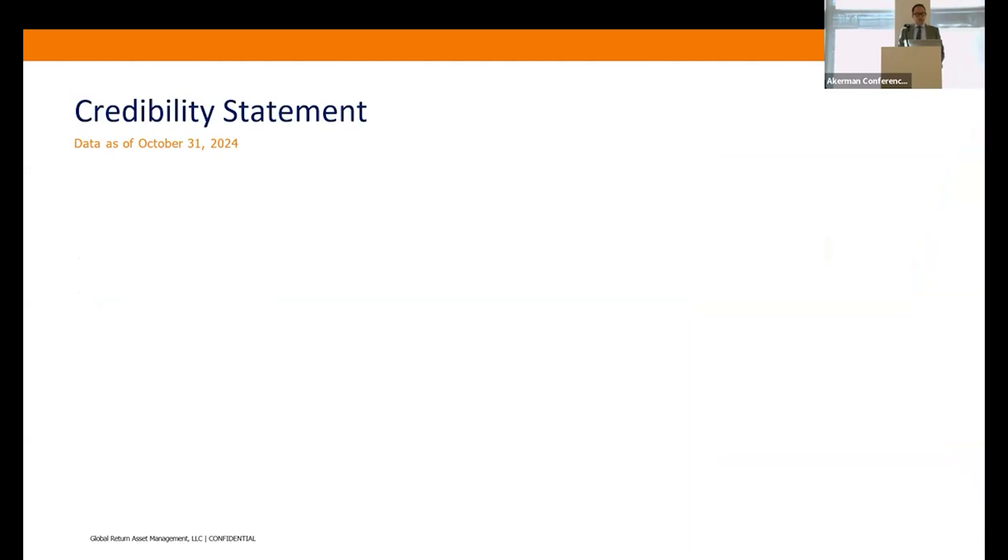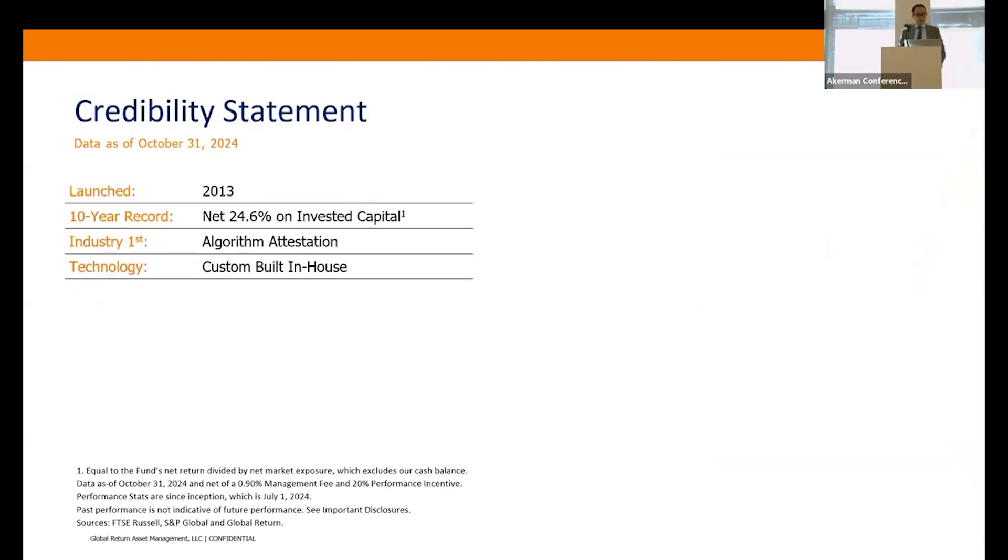A quick credibility statement about me. I started Global Return in 2013. We have a net tag of just under 25 percent on invested capital—to be clear, that is net and it excludes our cash balance. We are also getting what we think is the industry first algo attestation. A big three accounting firm is working with us on that, and all of our technology is built in-house. I've never used a Bloomberg terminal or Capital IQ or anything like that.